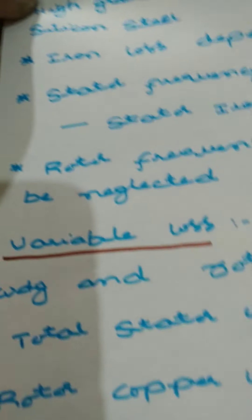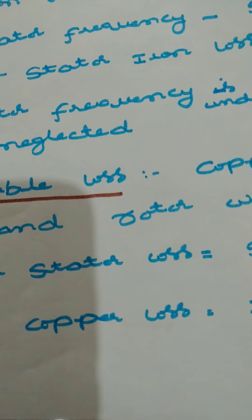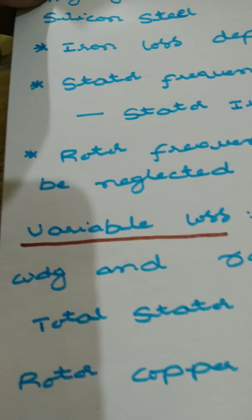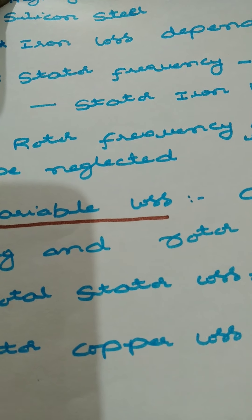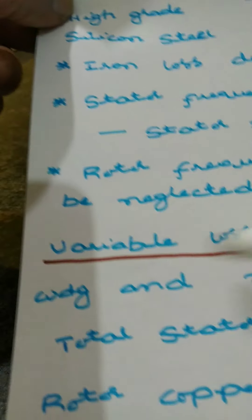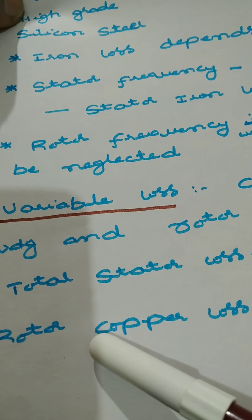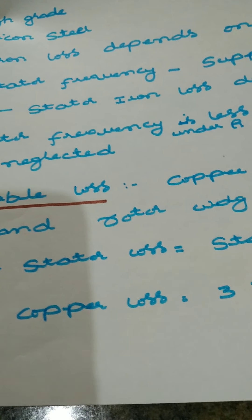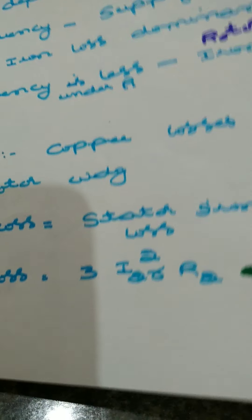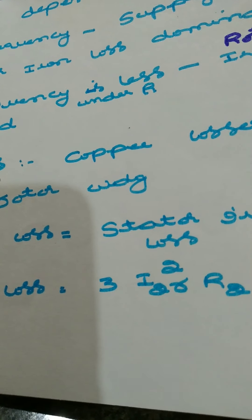Copper loss changes depending upon the load condition. As you put the load, the current drawn from the supply changes, stator current changes, and rotor current is also changing. Due to that, losses take place in the stator winding and rotor winding. Total stator loss is nothing but stator core loss plus stator copper loss. On the rotor side: rotor copper loss plus rotor core loss — but rotor core loss is neglected because under running condition the frequency is less.